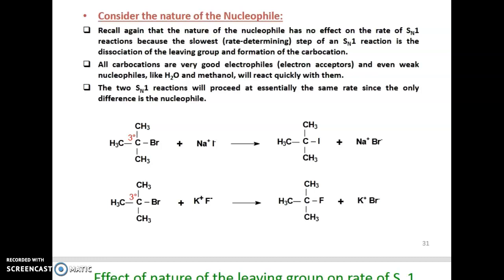The nature of the nucleophile has no effect on the rate of SN1 reaction, because the sole rate-determining step is the dissociation of the leaving group — the formation of the carbocation. All carbocations are very good electron acceptors, so even weak nucleophiles like H₂O and methanol will react quickly with them.